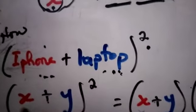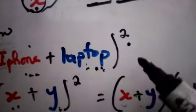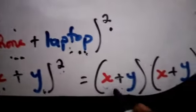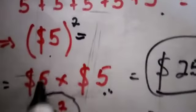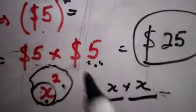So it's X plus Y here. X is the iPhone and Y is the laptop. Squared means we are going to multiply that by two, right? So we are going to expand that into two forms, just like in the case of this guy.